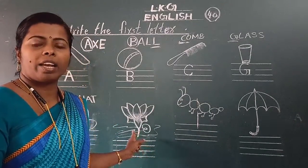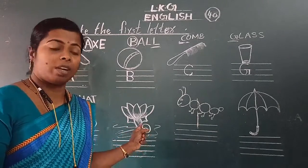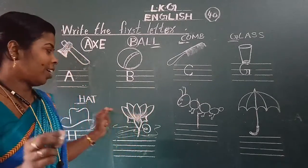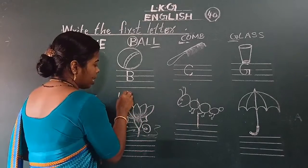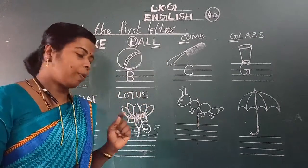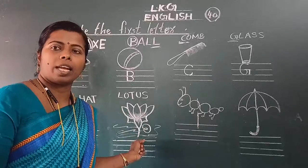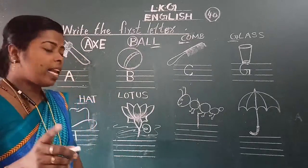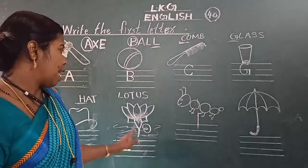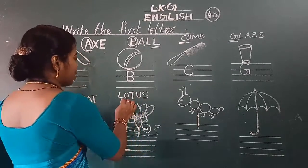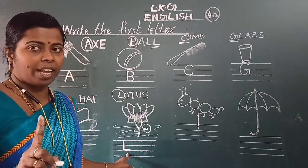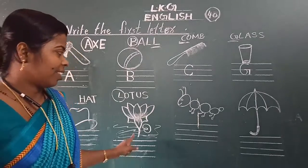Yeh kya hai? What is this? Yeh ek flower hai. This is a flower. Iss flower ka naam kya hai? Lotus. Okay? Lotus — L-O-T-U-S. First letter, let us write L. We have written L. Okay.